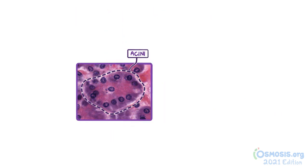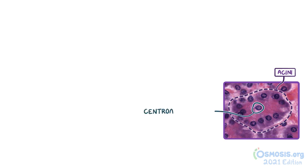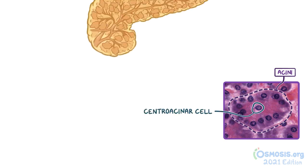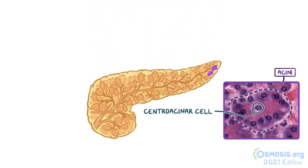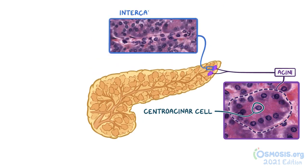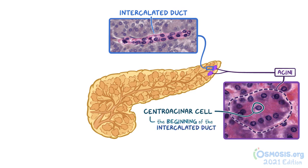The center of the acini will sometimes contain one or more cells with a paler appearance. These cells are called centroacinar cells, and they're actually extensions of the small ducts that drain the digestive enzymes produced by the acini, called intercalated ducts. The presence of centroacinar cells is a unique feature of the exocrine pancreas, and is also an identifying marker that indicates the beginning of the intercalated ducts.